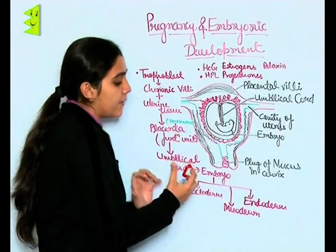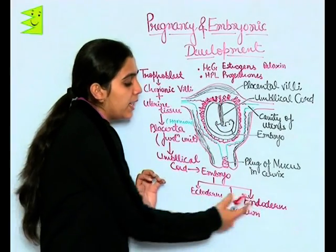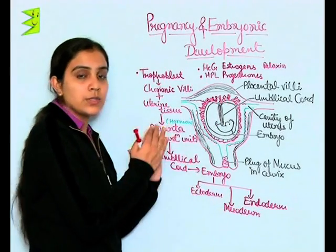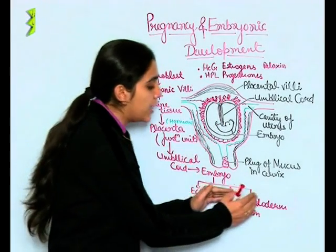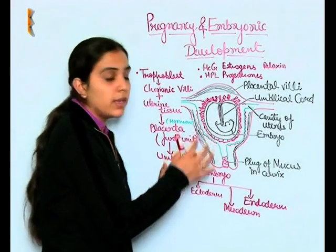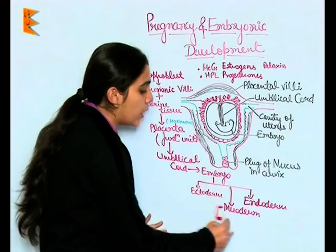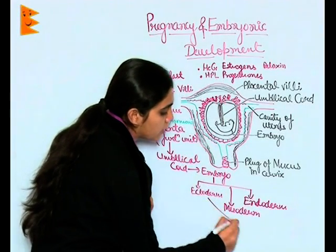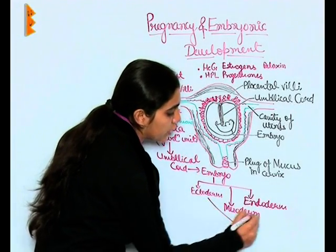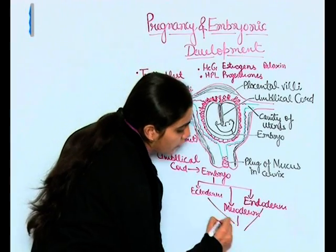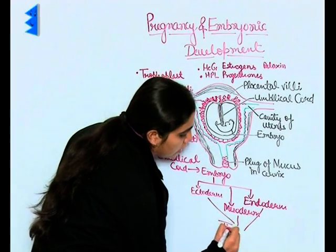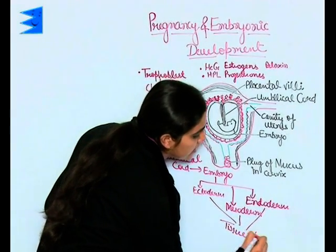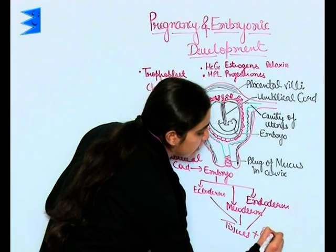The embryo has three layers: ectoderm, the outer layer; endoderm, the inner layer; and in between is the mesoderm. These three layers are responsible for the formation of tissues and organ systems.